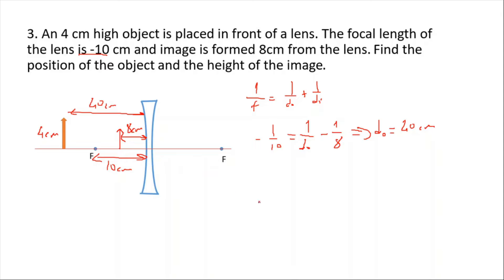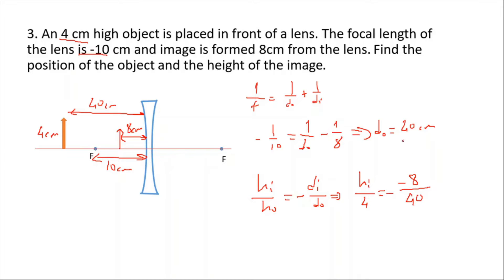To find the height of the image, we use: h_image / h_object = -d_image / d_object. So h_image / 4 = -(-8) / 40. After calculations, the image height equals 0.8 centimeters. This confirms the image is upright.